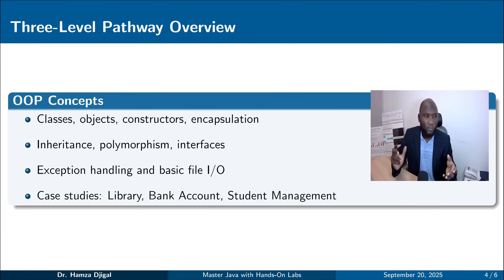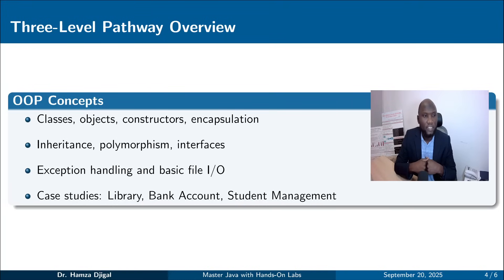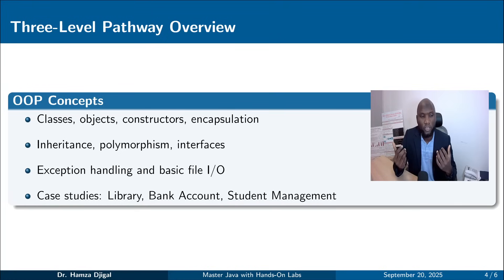The second path goes deeper: we talk about object-oriented programming — classes, objects, constructors, encapsulation, inheritance, polymorphism, interfaces, and exception handling, which is how to control errors. After that we'll give examples such as a student management system, a bank management system, or a library management system.